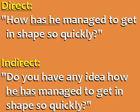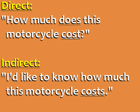Direct: 'How has he managed to get in shape so quickly?' Indirect: 'Do you have any idea how he has managed to get in shape so quickly?' The verbs have, has, and had also come after the subject in indirect questions. Direct: 'How much does this motorcycle cost?' Indirect: 'I'd like to know how much this motorcycle costs.' To form the indirect question, we eliminate the auxiliary verb 'does' and change 'cost' to 'costs.'